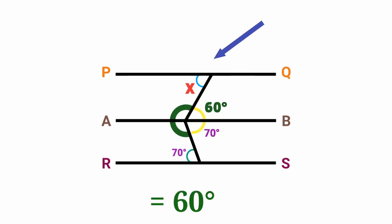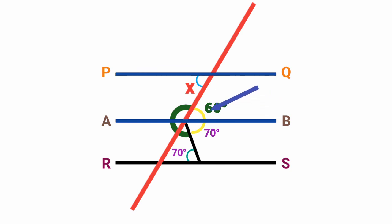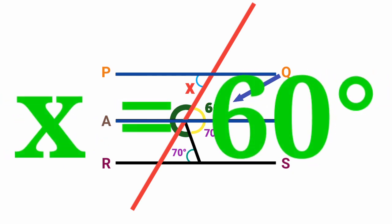We found this angle to be 60 degrees. Now, what about angle X? This line also intersects line PQ and line AB at the same time, and those two lines are parallel to each other. So this angle is alternate to the 60-degree angle, meaning angle X is also equal to 60 degrees. Simple and straightforward.